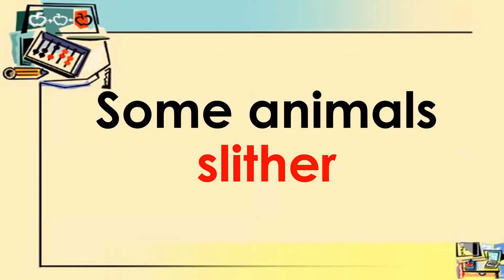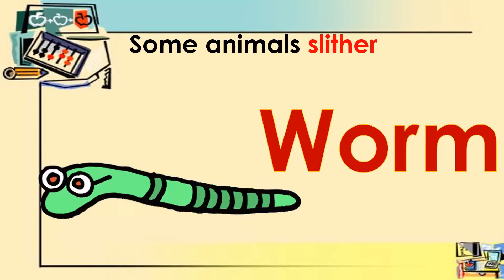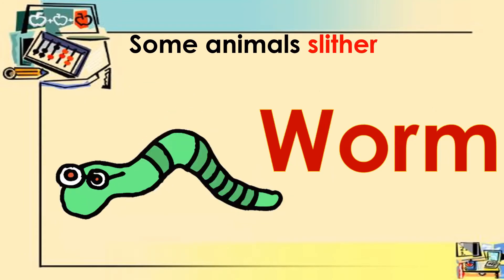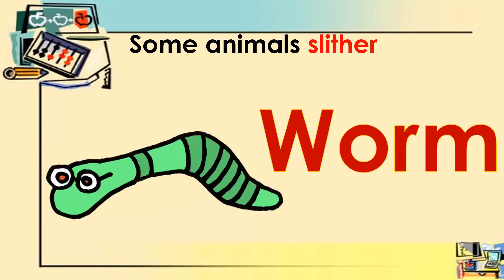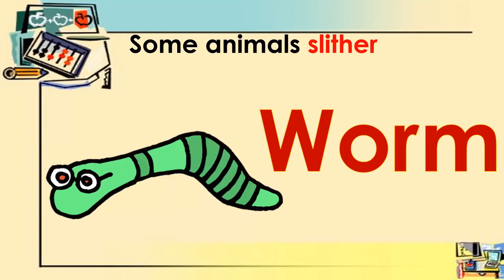Some animals slither. For example, snake — the snake slithers. Let's spell the word snake: S-N-A-K-E, snake. Next we have worm — the worm slithers. Let's spell the word worm: W-O-R-M, worm.